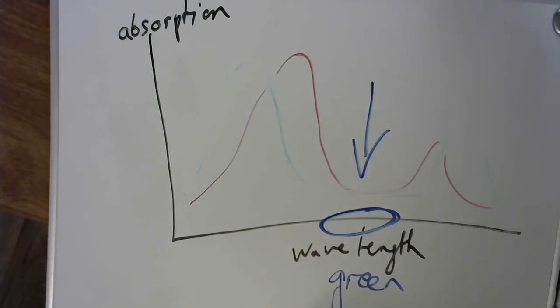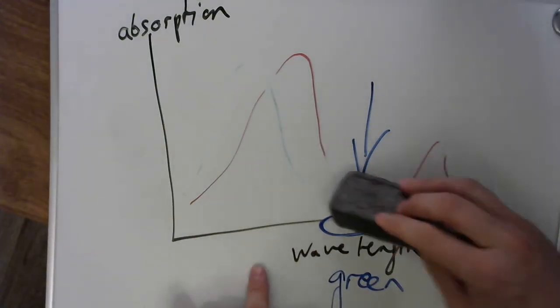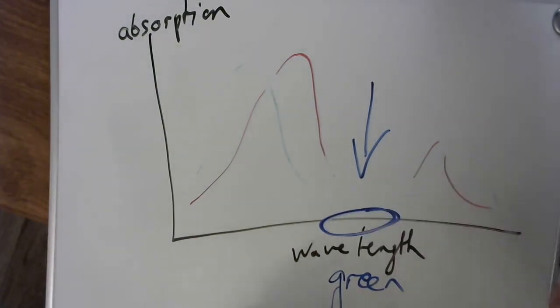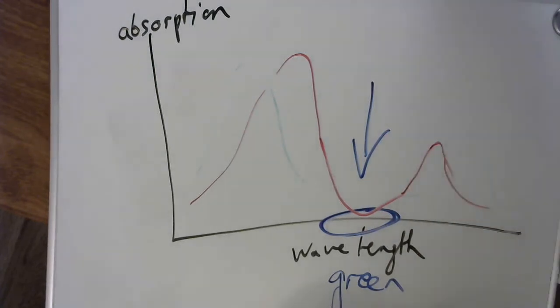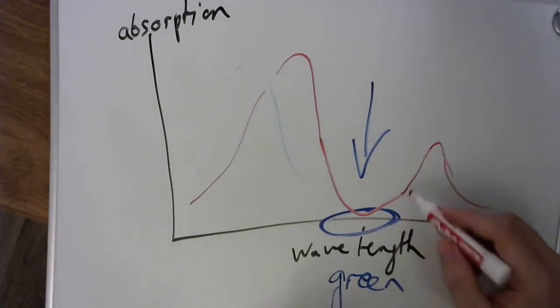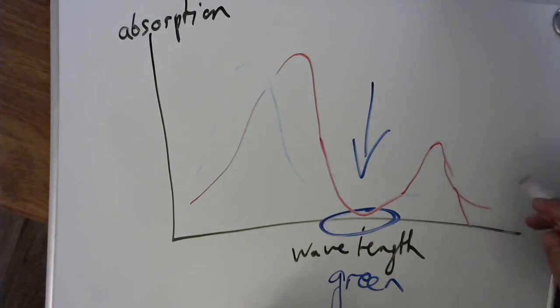So when you do that, what happens? And this is how I'm going to explain it best. Anthocyanin is actually going almost to zero in that area here, and really low over there, and almost to zero over here.